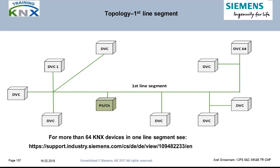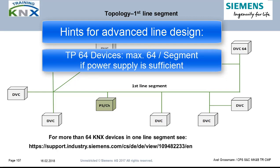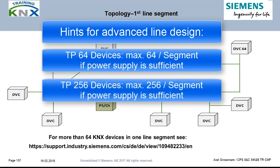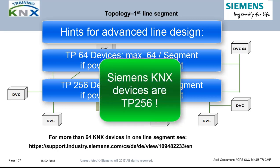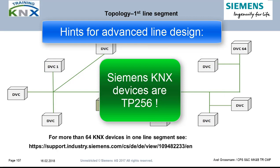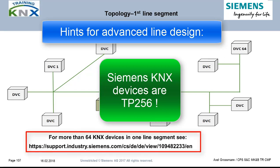A word for advanced KNX users: in the beginning of KNX, the limit of 64 named the bus devices also TP-64 devices. But for a couple of years already, the so-called TP-256 devices are on the market. The figure 256 means that you can operate up to 256 on one galvanically joined segment if their consumption is met by the supply and no TP-64 devices are present. Almost all Siemens Gamma InstaBus devices meet the TP-256 specification today.